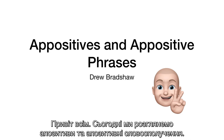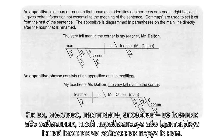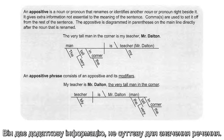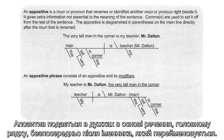Hello everyone, today we're going to look at appositives and appositive phrases. As you might remember, an appositive is a noun or a pronoun that renames or identifies another noun or pronoun right beside it. It gives extra information not essential to the meaning of the sentence. Commas are used to set off the appositive from the rest of the sentence. The appositive is diagrammed in parentheses on the sentence base, the main line, directly after the noun that is renamed.